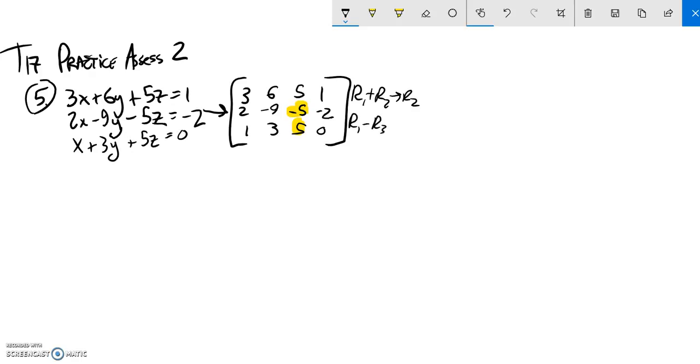So row 1 minus row 3, put that into row 3. I have a lot of options. Those are just the ones I chose. So first row is unaffected, so 3, 6, 5, 1.